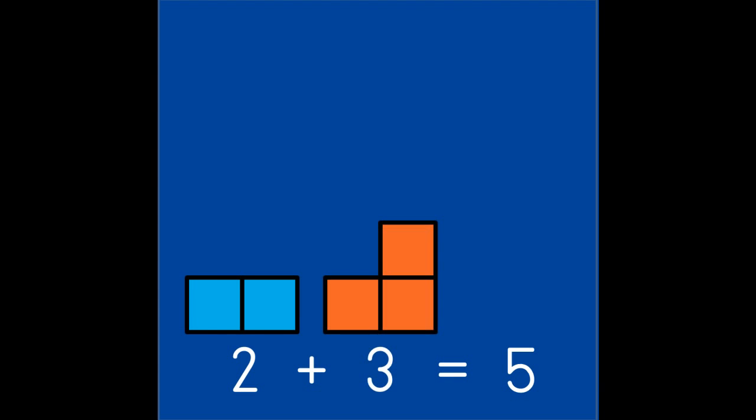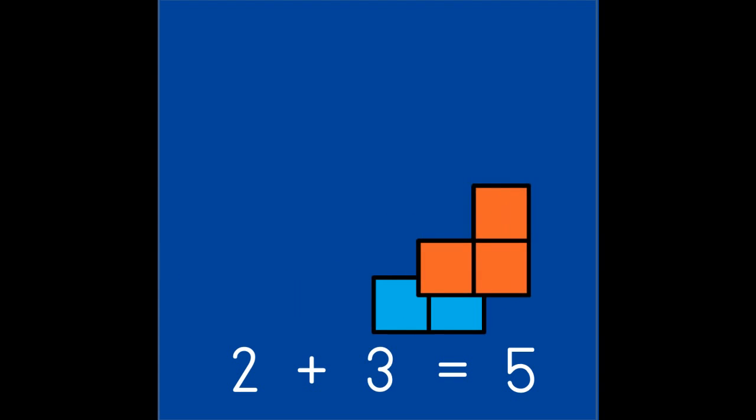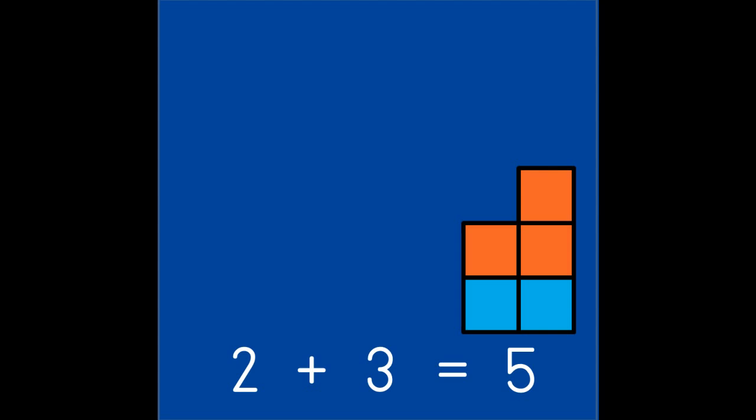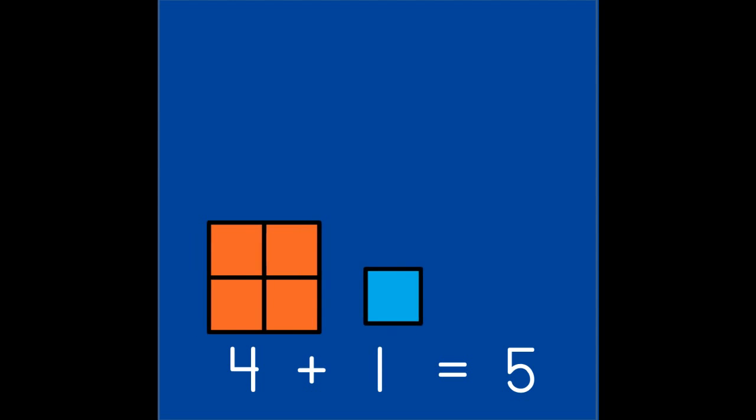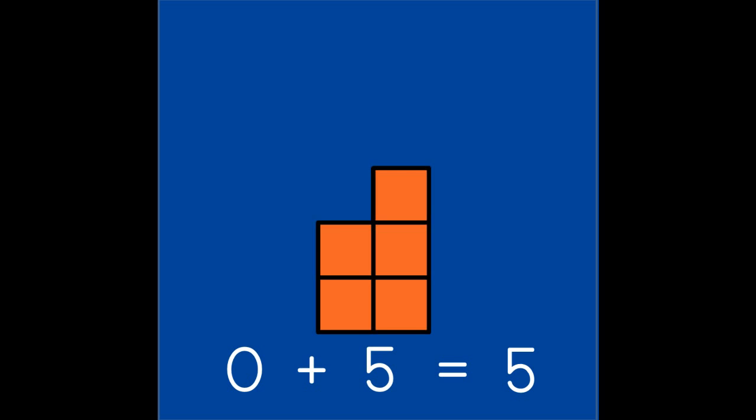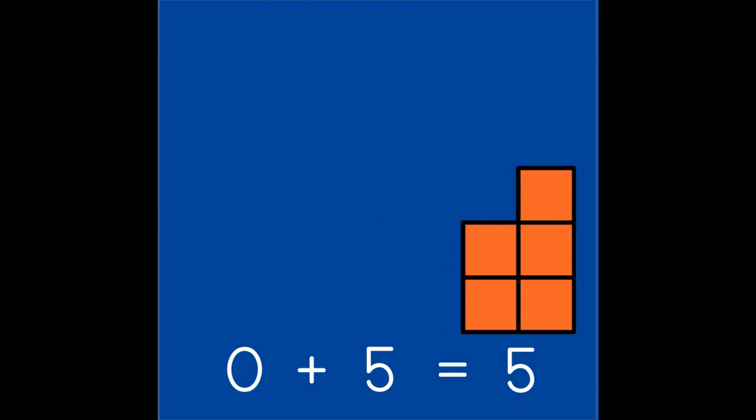How many does 2 need to make 5? Did you say 3? That's it! 2 and 3 are partners of 5. What does 4 need to make 5? 1. 4 and 1 make 5. What does 0 need to make 5? 5. 0 and 5 are partners of 5.